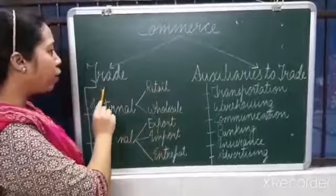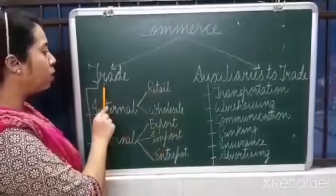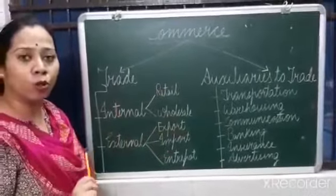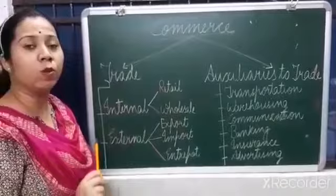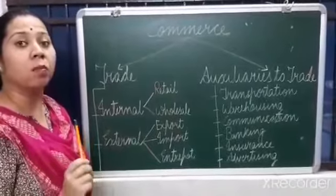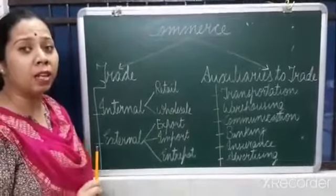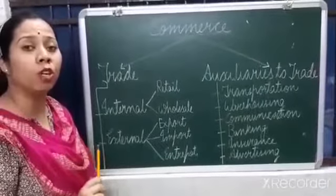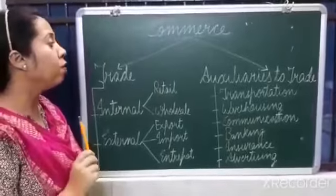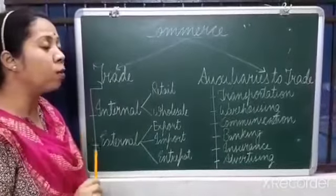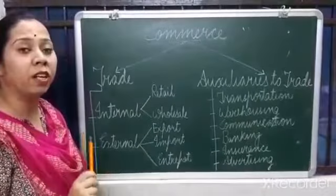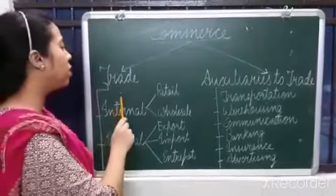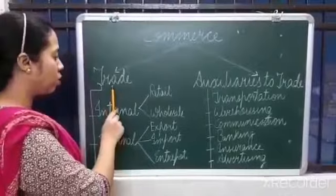Coming to the first part of commerce, that is trade. Trade refers to all those activities which involve buying and selling of goods and services with the motive to earn profit. When we are dealing in buying and selling of goods and services with the motive to earn profit, that is known as trade.